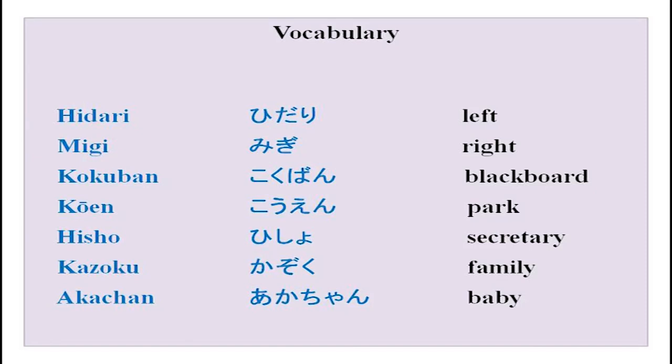Now this is some vocabulary. You can go through the vocabulary — we did these words in the lesson: sai, hidari, migi, kokuban, koen, hisho, kazoku, akachan — meanings are given on the right side. Remember: when you are practicing at home, please practice loudly so that you can hear what you are practicing — it helps a lot in the long run.